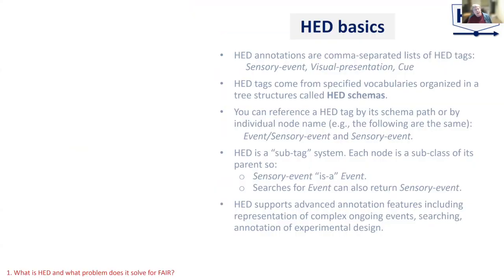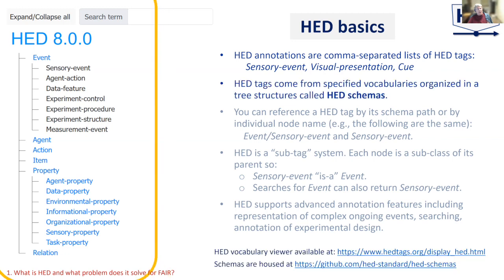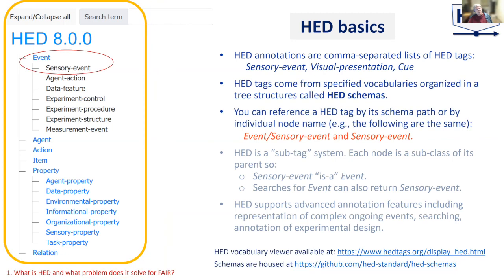HED annotations are comma-separated lists of HED tags. For example, sensory event, visual presentation, and cue are examples of HED tags. HED tags come from specific vocabularies that are organized in a tree structure. On the left you see a snapshot of our schema viewer, which is partially open — some elements are collapsed, so they have items under them.